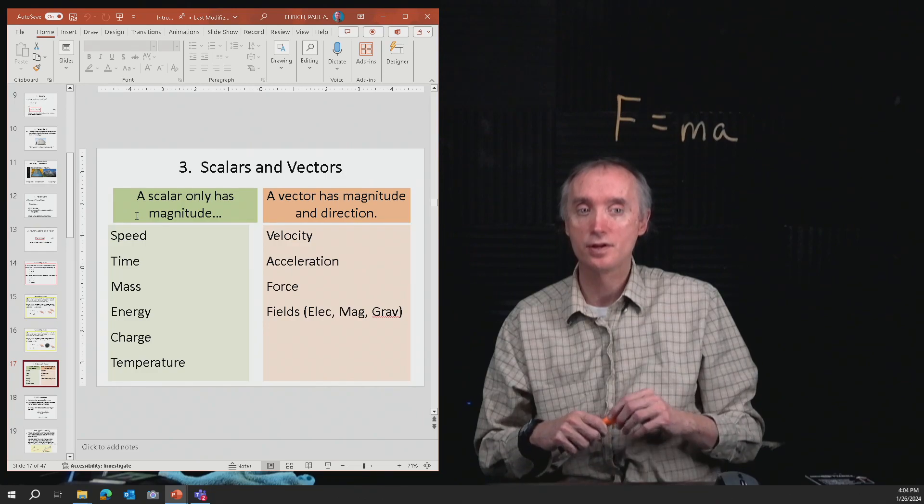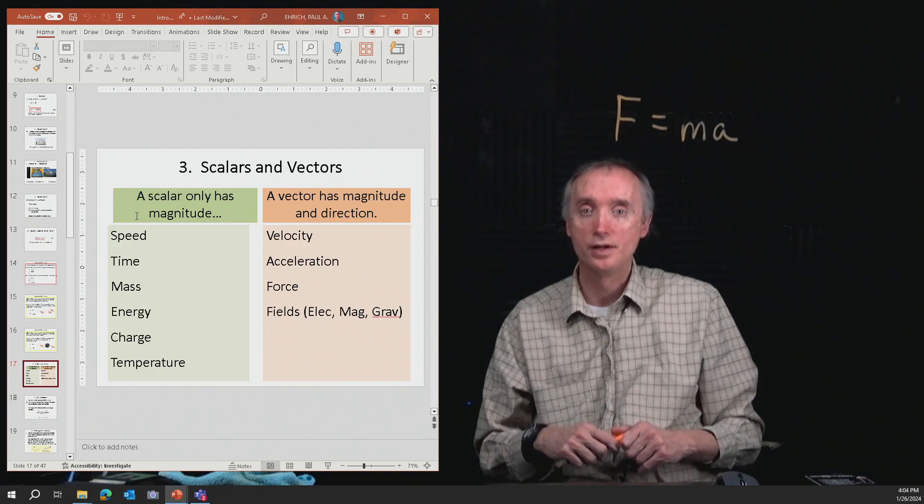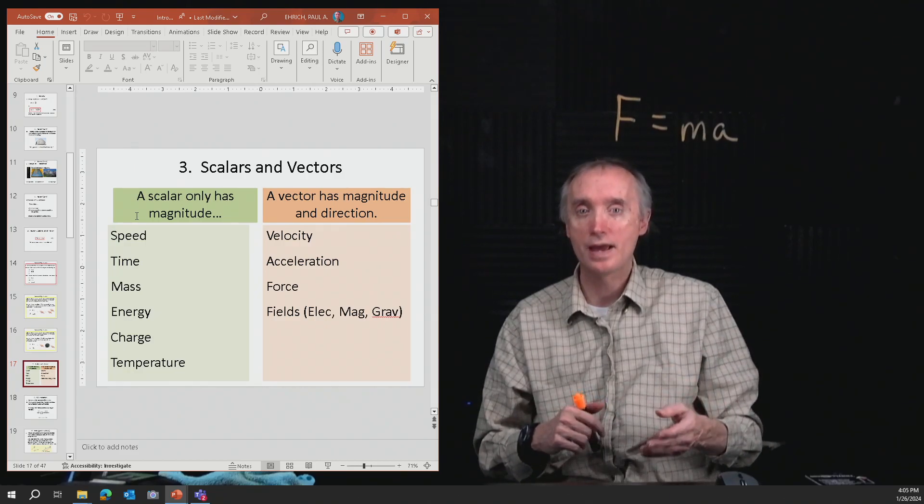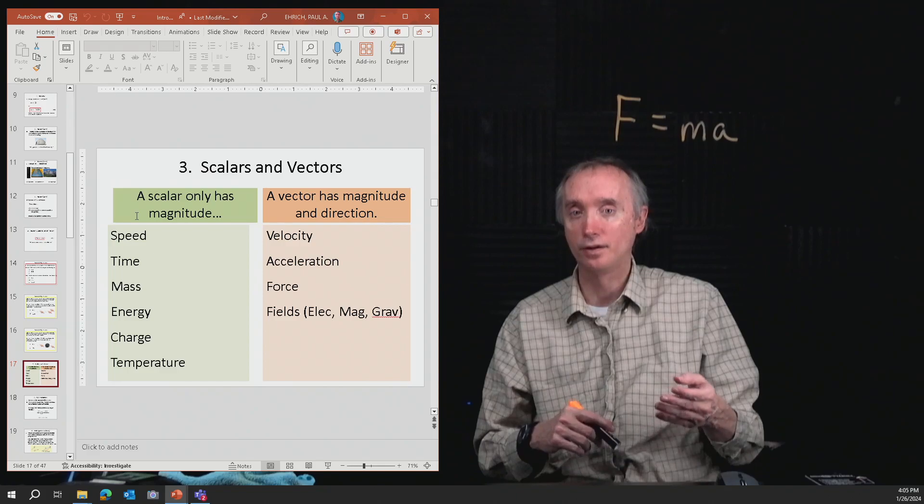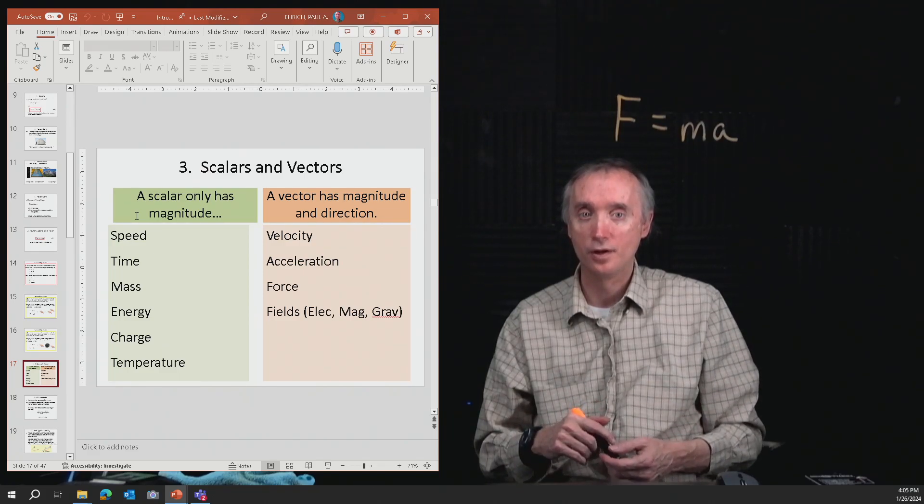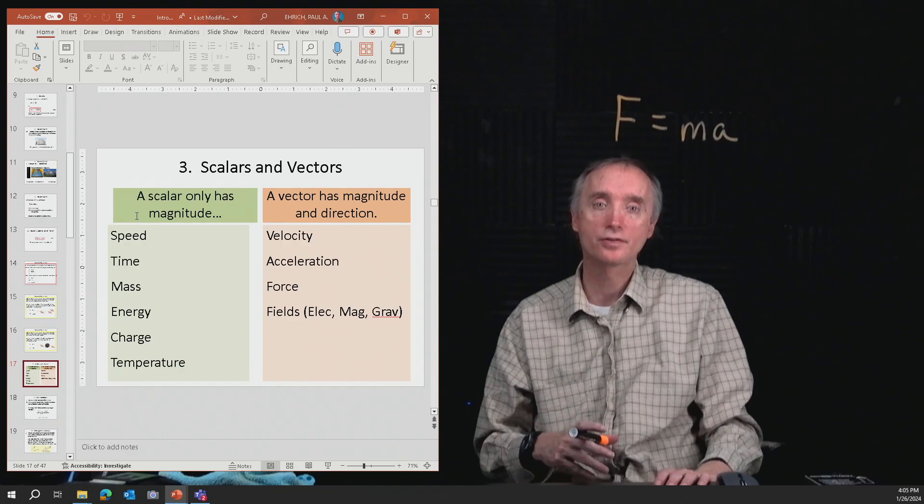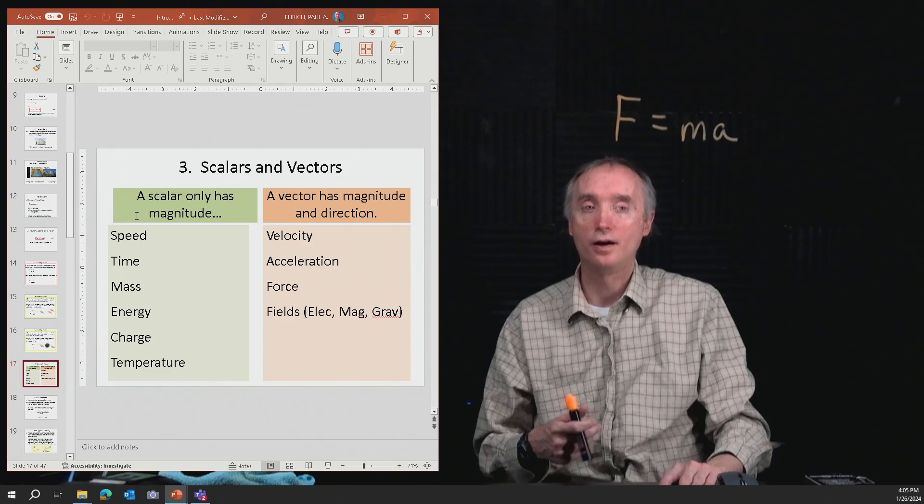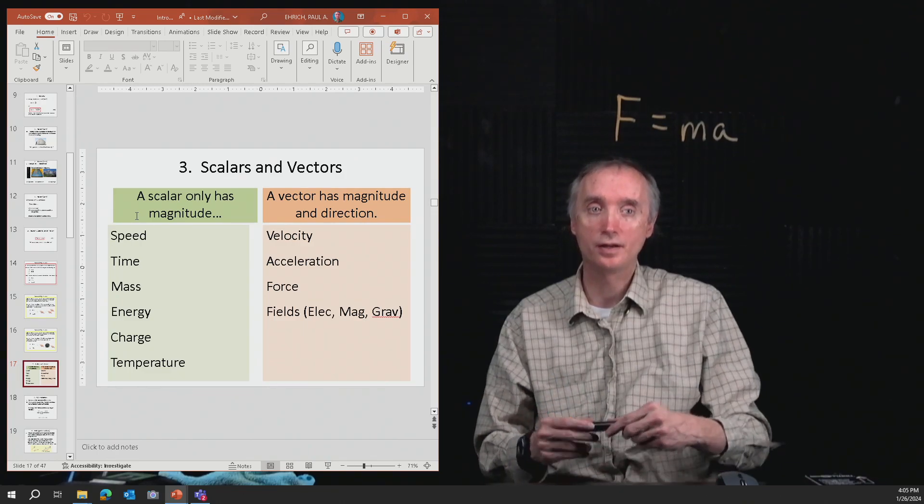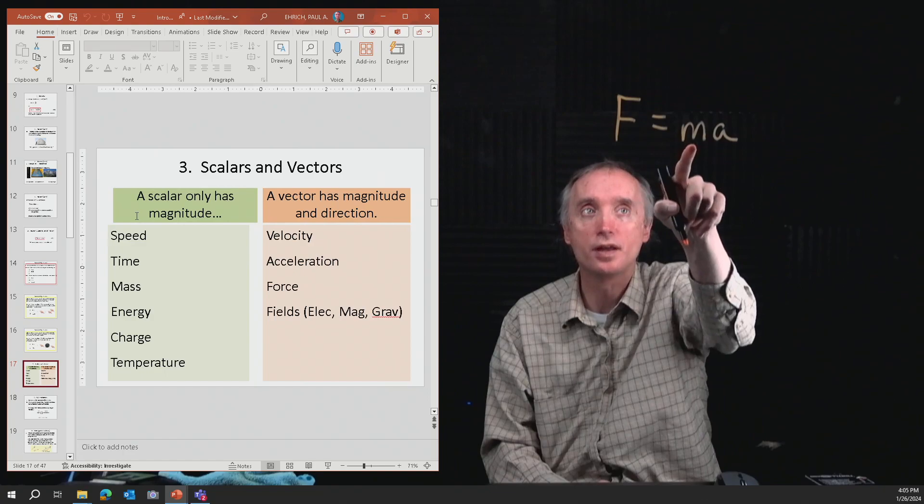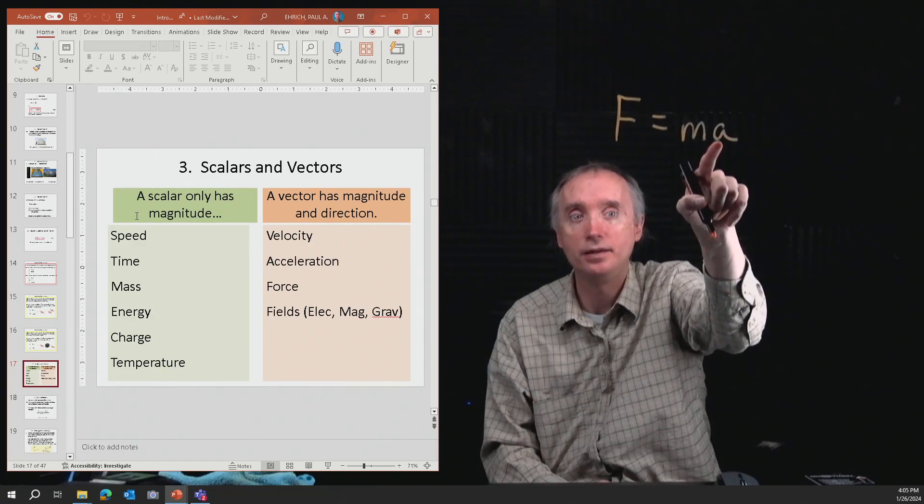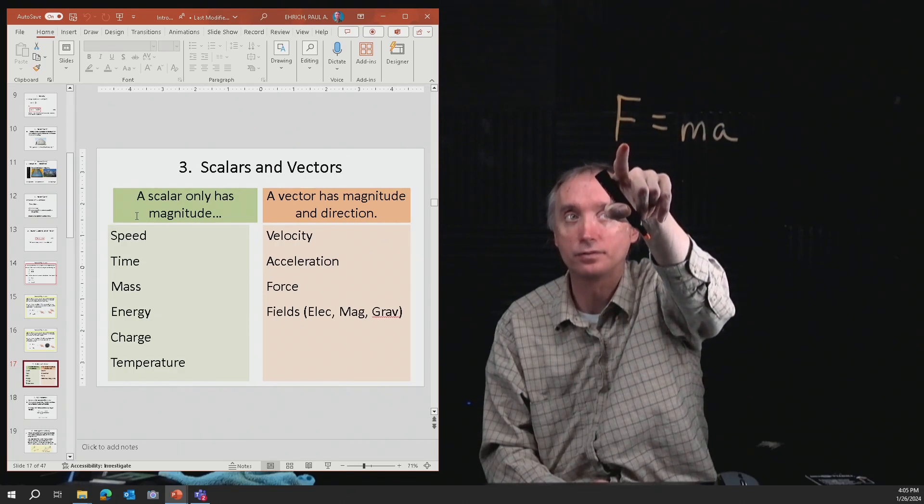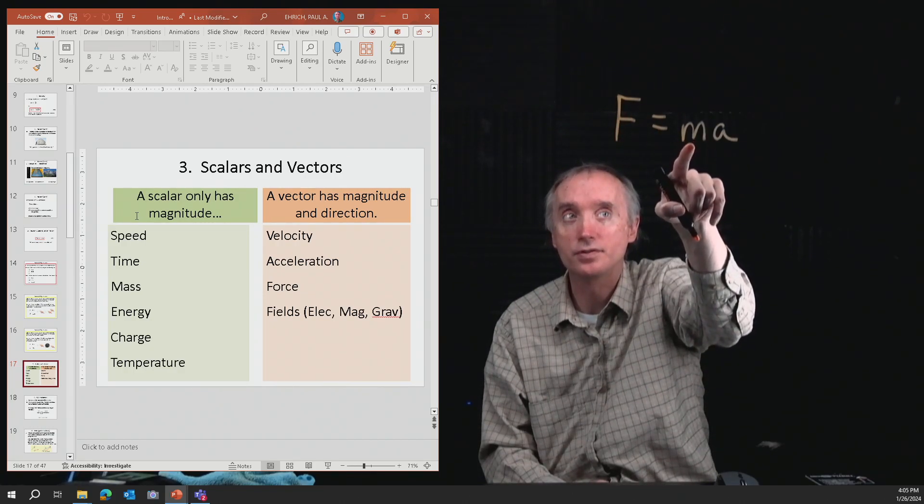Some other examples of scalars are time, mass, energy, electrical charge, and temperature, whereas examples of vectors are velocity and acceleration, forces, because if force is equal to ma and a is a vector, then that means that F is a vector. M is going to be a scalar.